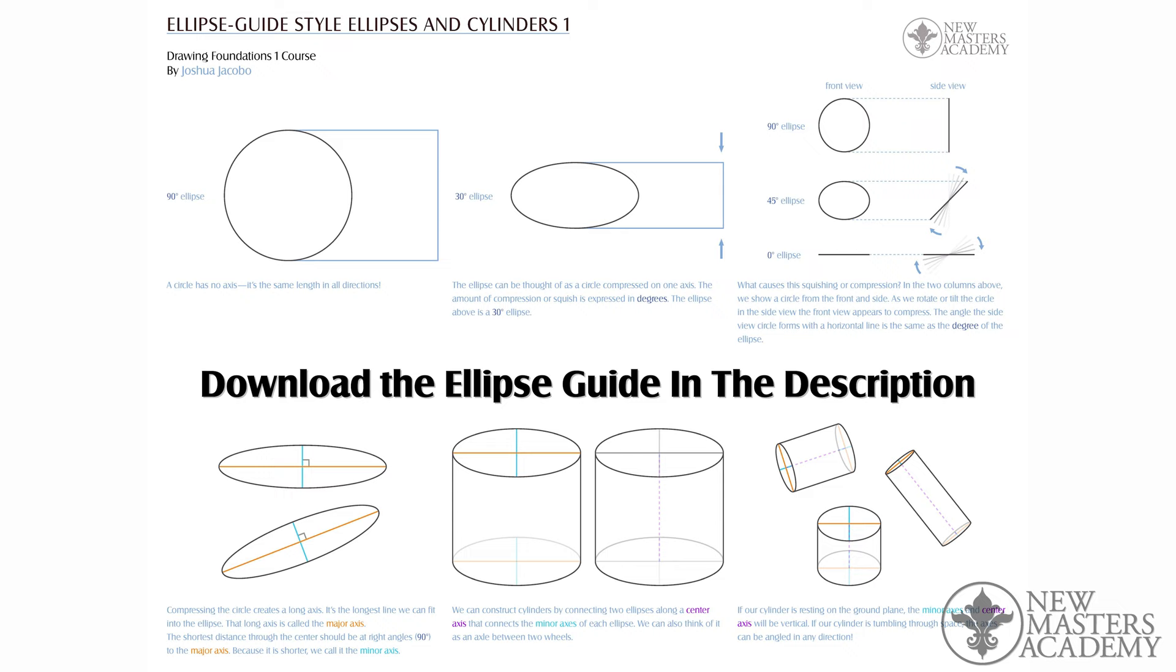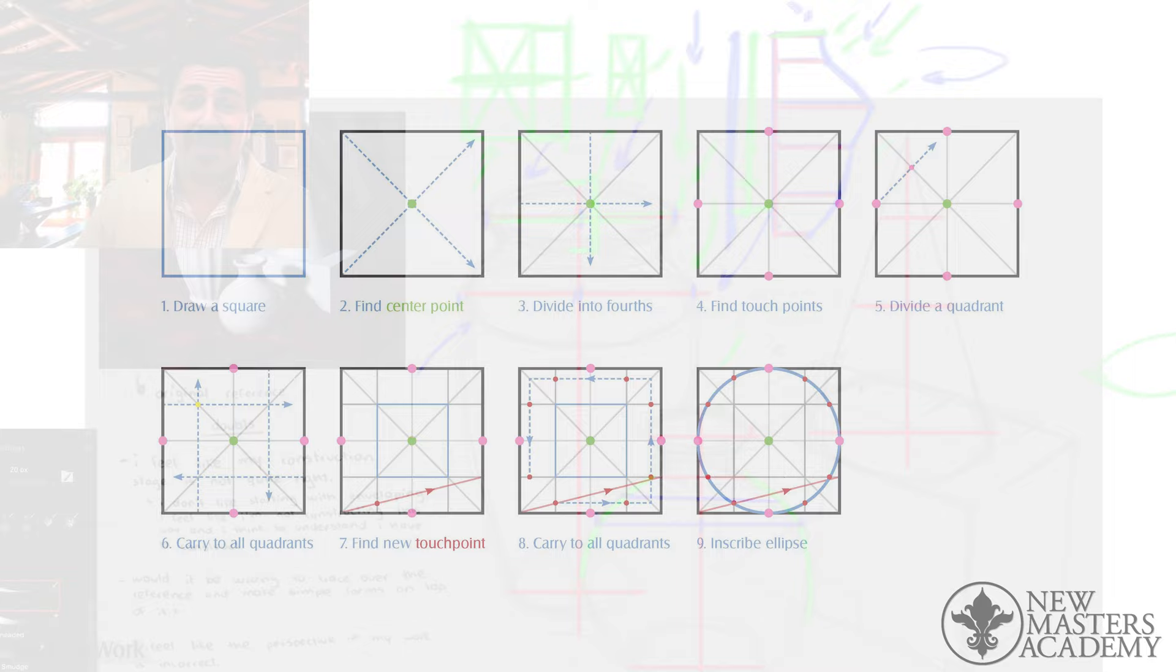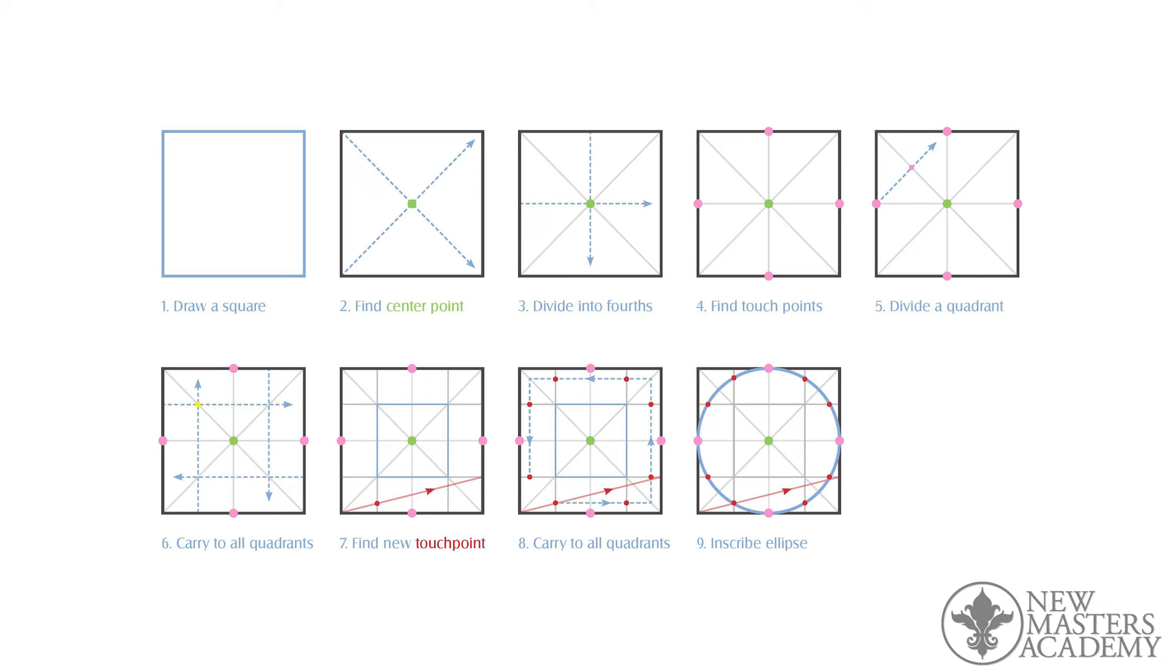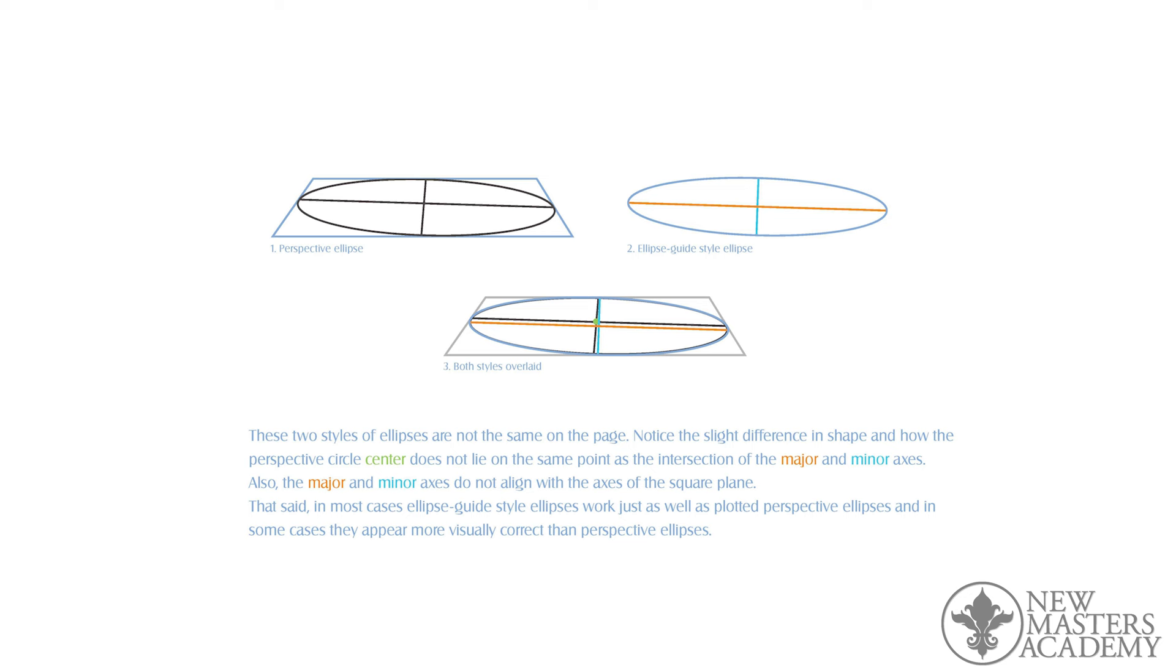You need to read my ellipse guide because I explained this. When you construct an ellipse in a plane, it's not a perfect circle in perspective because we have to approximate it with four points, eight points, twelve points, eighteen points, or twenty-four points. It's not even accurate in perspective. The reality is that you want to use a geometric ellipse, not perspective ellipses in almost every case.